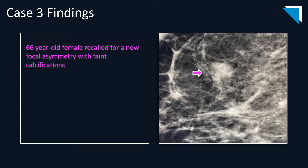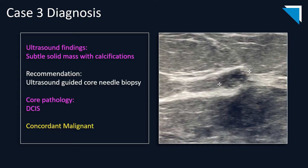Case 3 is a 66-year-old female recalled for a new focal asymmetry with faint calcifications. As you can see on the mammogram image, the calcifications are predominantly faint, but there is one coarse rounded calcification that catches your eye. The asymmetry had very indistinct margins, partially obscured by surrounding breast tissue. Ultrasound findings showed a subtle solid mass with calcifications within — it blends in quite well with the surrounding breast tissue. Luckily, the radiologist recommended ultrasound-guided core needle biopsy of the subtle lesion. Core pathology showed DCIS, and these results are concordant malignant.